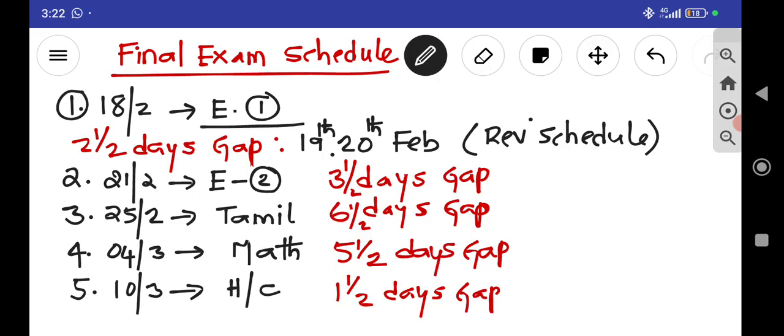Exam 1, you are having English 1, and after that you have two and a half days gap. So how did you get that half day? Because here 18th afternoon also you can consider half day for your preparation. That is 18th half day, 19th, and 20th.